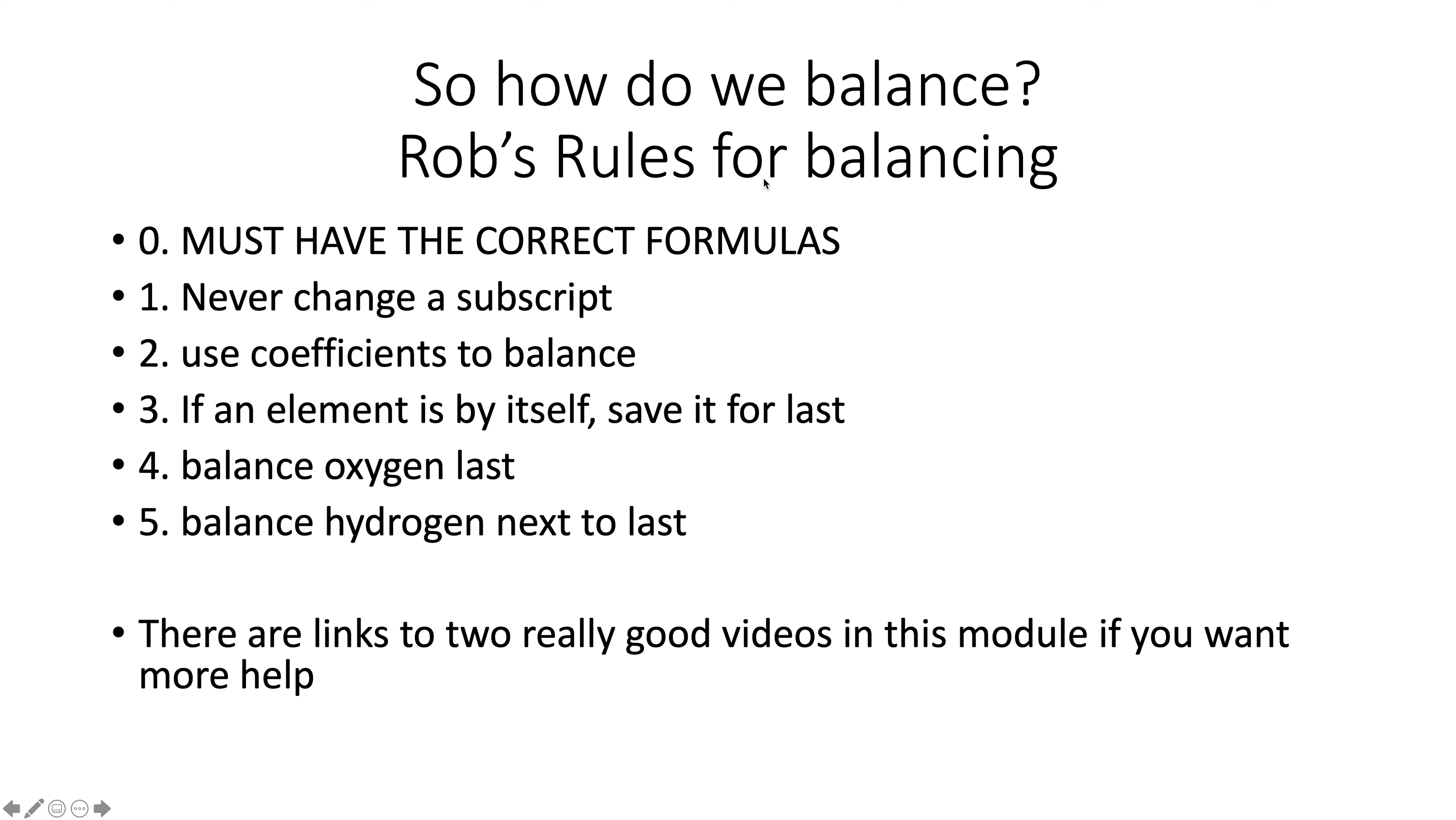These are my rules for balancing an equation. Rule zero, and I call it rule zero because it is so important, you have to do it before you start. You have to have the correct formulas. Once the formulas are correct, you never change a subscript. If you change a subscript, the gods of chemistry will become angry, the skies will darken, and a bolt of lightning will hit you. Actually what happens is if you change a subscript, it's a different compound. So we use coefficients. The other three are just good advice. If there's an element by itself, it's easy to save it for last. It's a good idea to balance oxygen last, maybe hydrogen next to last, just because oxygen is frequently found in a lot of compounds. We're going to just go through some examples now.